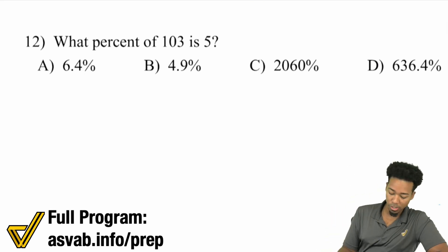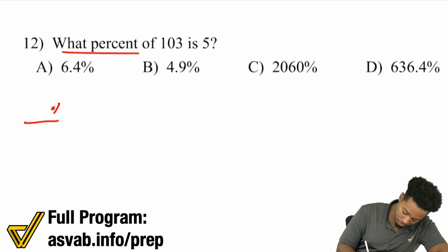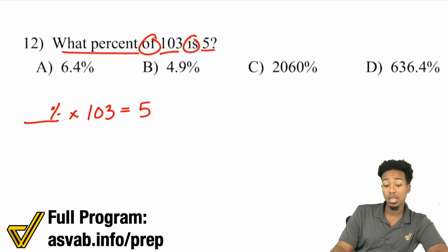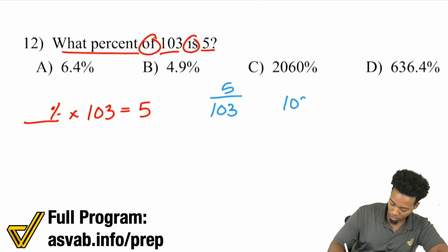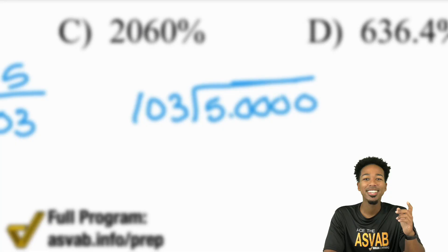So what percent of, so times 103, is equals 5. If you see this, you're working backwards. You've got to divide to see what that percent is. But remember, it's going to be in decimal format. You've got to turn it back into a percent once you have it. Let's divide 5 by 103. 103 divided into 5, put those decimals just in case you need them.